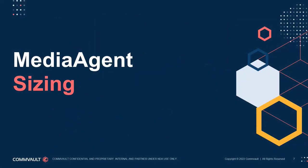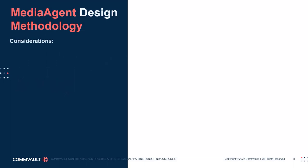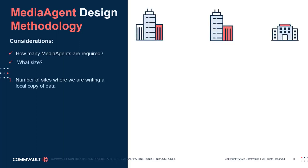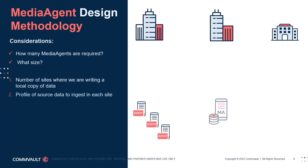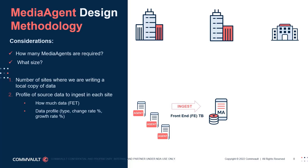Now let's move on to media agent sizing. There are two basic but important considerations: how many are needed, and what size should they be? Start by identifying all sites where a local copy of data needs to be written — you should have a good idea from the solution discovery phase. Next, factor in the amount of front-end terabytes and the profile of that data which will be ingested at each site, using information gained from the data profiling exercise.